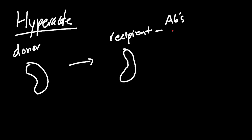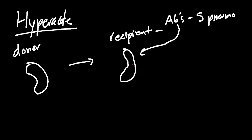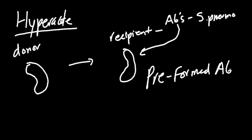If any of these preformed antibodies cross-react — for example, let's say there's an antibody against Strep pneumo — and some of the antigens on the donor kidney look like Strep pneumo antigen, those antibodies can actually attack the organ. The key thing is: preformed antibodies attack the donor organ.